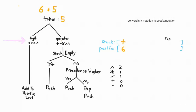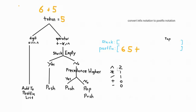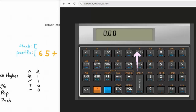Our final element of the expression is five. Assign five to token, do the test: is it a digit or an operator? That is a digit — follow the lead, it says add to postfix list, so we add five. Now we're done parsing our input. We have to fix the stack: pop all elements from the stack and add them to the end of the postfix notation. So we write plus. Our postfix notation is: six five plus.